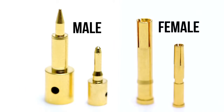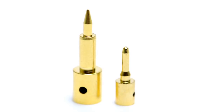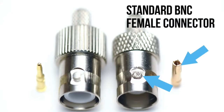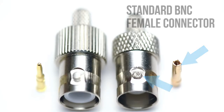The second property we need to identify is the polarity of the connector. Polarity is determined by the presence of a male pin on the connector. Most coax connectors come with a separate pin that attaches to the center conductor. A male pin is completely solid, while a female pin is hollow.